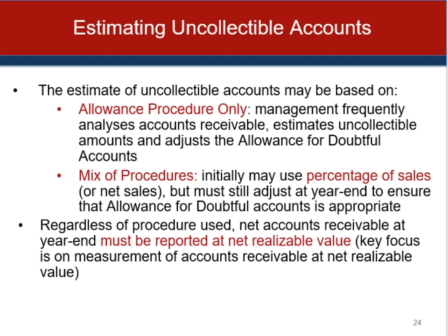Either method can be used; many companies use the mix of procedures method — the percentage of sales method throughout the year, then at year-end adjusting using the percentage of receivables method. These are also called the balance sheet approach and the income statement approach. The income statement approach uses sales to determine bad debt expense to match against revenue, whereas the balance sheet approach estimates the valuation adjustment for the allowance for doubtful accounts, with bad debt expense as the residual of that calculation.